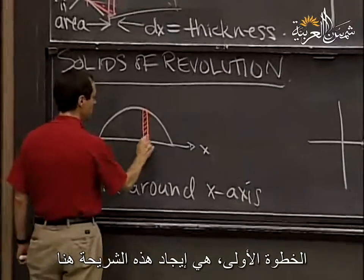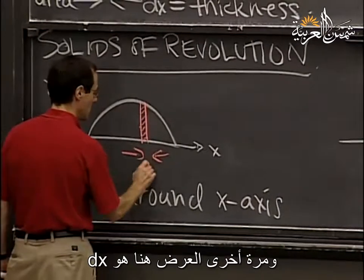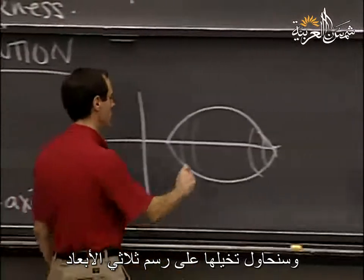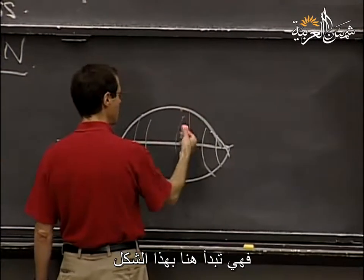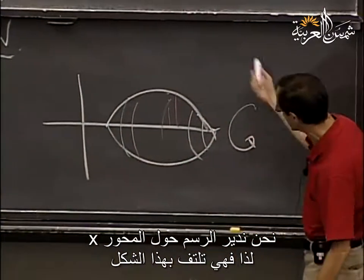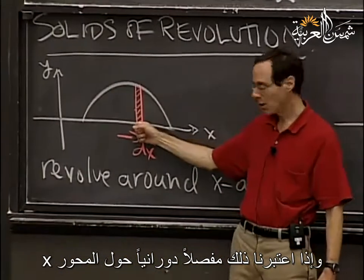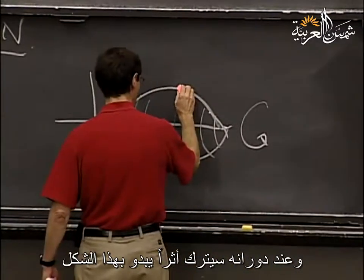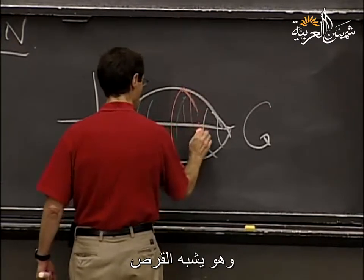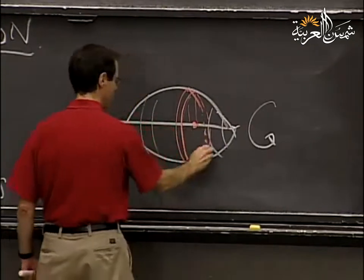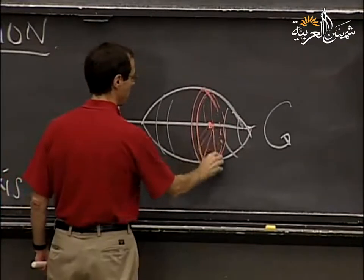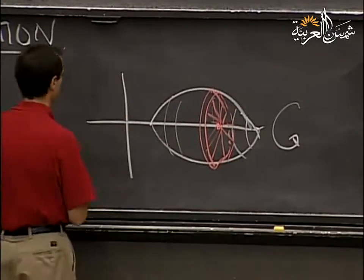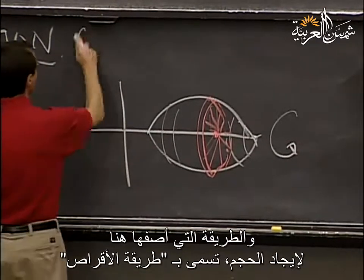The first step is to consider what this slice looks like — it's going to have width dx. We consider what it looks like in the 3D picture. We're revolving around the x-axis, so it's spinning around this way. If you take this and think of it as being on a hinge down on the x-axis, it's going to swing down, swoop around, and come back. That traces out a disk. So the method I'm describing for figuring out the volume is called the method of disks.